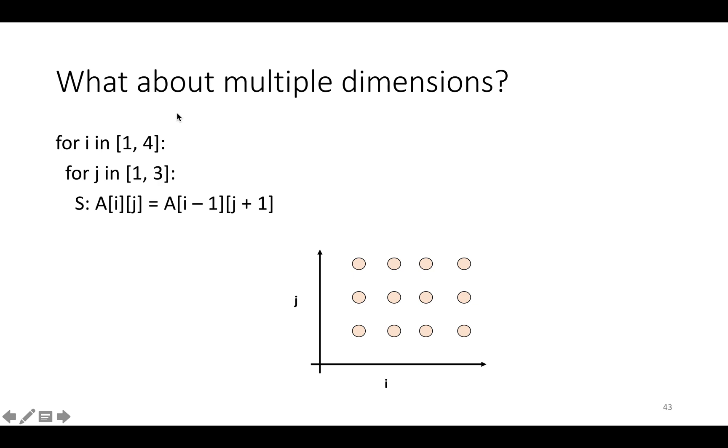So in this case, we've got for i in 1 to 4, for j in 1 to 3, the statement is A[i][j] = A[i-1][j+1]. And if you want to think about the iteration domain or the set of statements in this program, instead of being a one-dimensional set made up of points on a line, it's a two-dimensional set made up of basically this rectangle of points in 2D with i from 1 to 4 and j from 1 to 3.